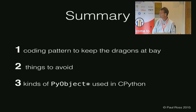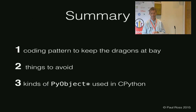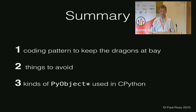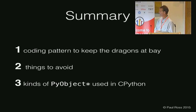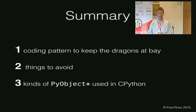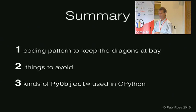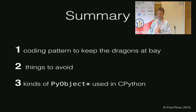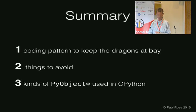In summary, this talk: I'm going to give you one coding pattern for your C functions when writing CPython code, two things to avoid if you want safe C extensions, and the three kinds of Python object references that you have in CPython. When you look at your CPython code in C, any Python object pointer there, you should be able to identify which of these three kinds of pointer it is.